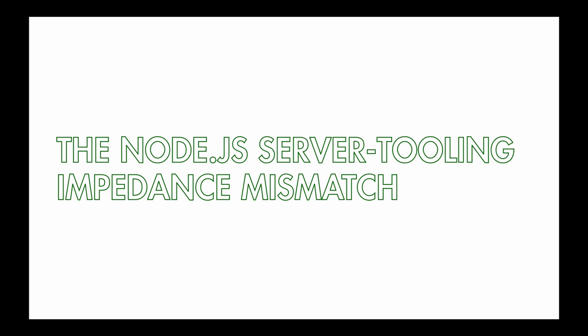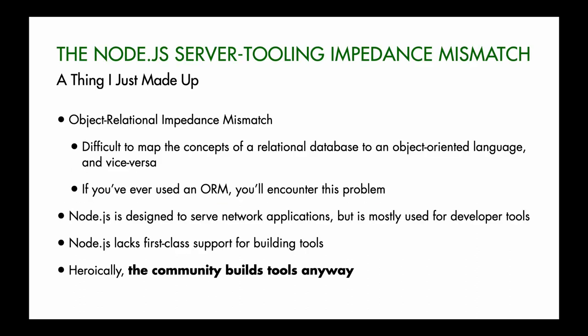You may have heard of the Object-Relational Impedance Mismatch. The deal is that it's difficult to map the concepts of a relational database to an object-oriented programming language and vice versa. If you've ever used an ORM, you've probably felt this problem. Objects in a programming language are a graph or hierarchy, while data in a relational database is tabular — no notion of class, encapsulation, inheritance, polymorphism, or real pointers.